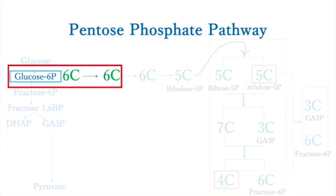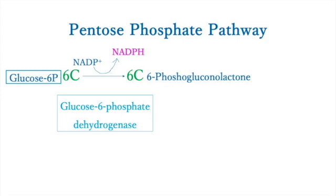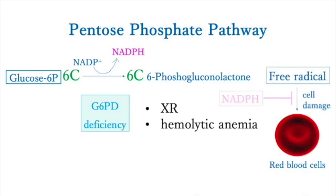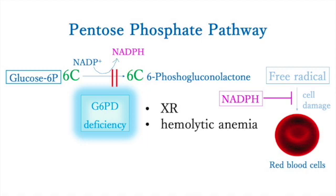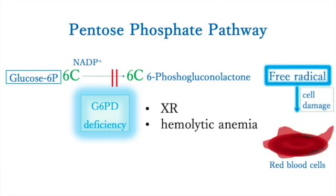The first reaction is USMLE high-yield. Glucose-6-phosphate dehydrogenase (G6PD) is used in this reaction. G6PD deficiency is an X-linked recessive disorder. The main symptoms come from hemolytic anemia. The pentose phosphate pathway is the only source of NADPH production in red blood cells. NADPH protects red blood cells from oxidative damage, so rupture of red blood cells may occur in people with G6PD deficiency.